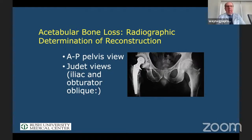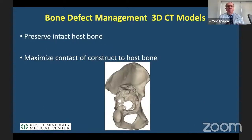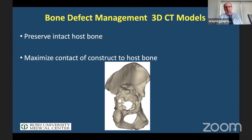We start with a simple AP pelvis complemented with Judet views. We can get a lot of information about what is and isn't present, and Judet views give us a good view of the posterior column. Bone defects come to life much more readily when CT models are obtained. 3D CT scans are especially helpful if you don't do a lot of these cases, to see what's available and maximize contact for a stable implant.